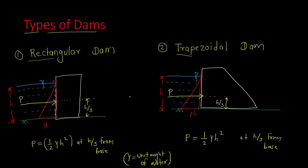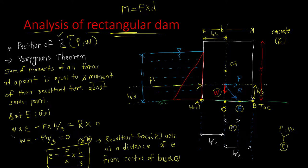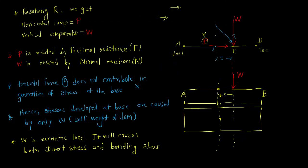In this lecture, we will be looking at the analysis of a trapezoidal dam. In the previous two lectures, we covered the analysis of a rectangular dam. In a rectangular dam, two major forces act: P and W, that is, lateral thrust and the self-weight of the dam. The resultant force of P and W is R. We resolved R back into P and W, and found that the horizontal force P does not contribute to the generation of stresses at the base.